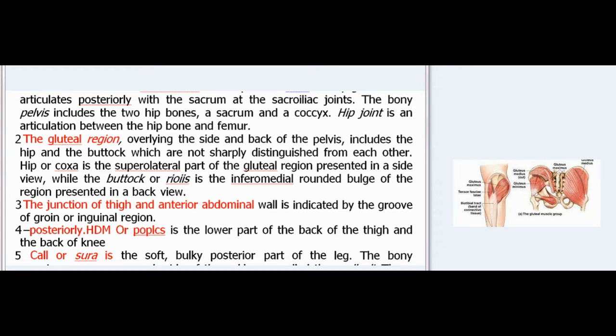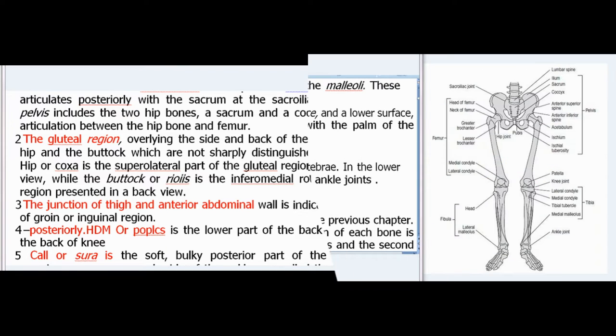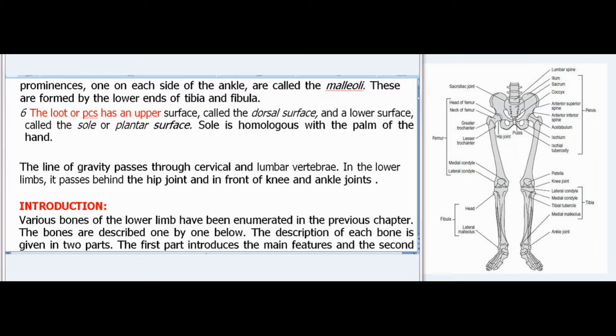The hip or coxa is the superolateral part of the gluteal region presented in a side view, while the buttock or nates is the inframedial rounded bulge presented in a back view. The junction of thigh and anterior abdominal wall is indicated by the groove of the groin or inguinal region. Posteriorly is the lower part of the back of the thigh and the back of the knee. The calf or sura is the soft bulky posterior part of the leg. The bony prominences on each side of the ankle are called the malleoli, formed by the lower ends of tibia and fibula. The foot has an upper surface called the dorsal surface and a lower surface called the sole or plantar surface.